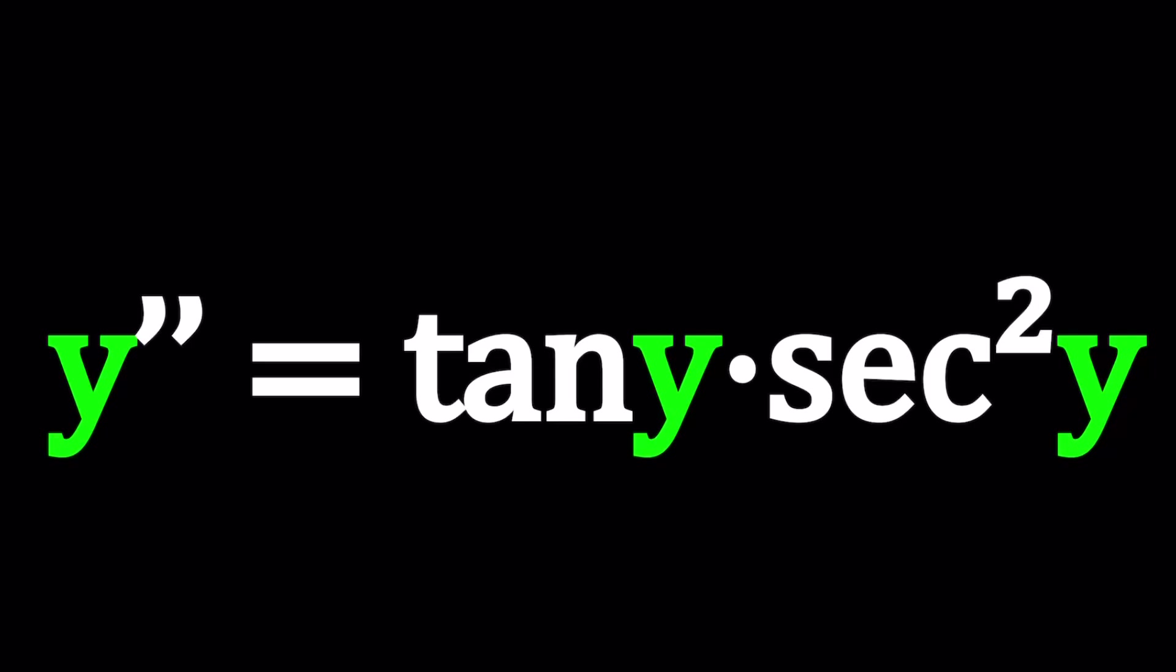Hello everyone. In this video we're going to be solving an interesting differential equation. I call this equation interesting because we have y double prime on the left hand side instead of y prime. So we have the second derivative of y being equal to a function of y, tangent y times secant squared y.